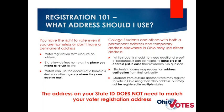What address should you use? Some people are homeless and don't have a permanent address, but your voter registration form requires one. State law defines home as any place you intend to return, and they have clarified that if you are homeless, you can use a shelter or other agency where you can receive mail. One thing your agencies can do is offer to serve as an address for homeless people and take responsibility for making sure they get their registration confirmation.